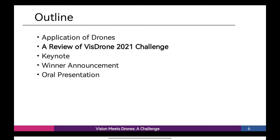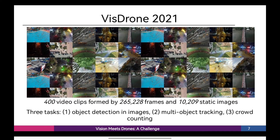Next, let's review the VisDrone 2021 Challenge. The VisDrone 2021 dataset is collected by the AI Sky Eye team at the Lab of Machine Learning and Data Mining, Tianjin University, China. The benchmark dataset consists of 400 video clips, formed by 265,228 frames, and 10,209 static images, captured by various drone-mounted cameras, covering a wide range of aspects including location — taken from 14 different cities separated by thousands of kilometers in China — environment (urban and country), objects (pedestrian, vehicles, bicycles, and so on), and density (sparse and crowded scenes).